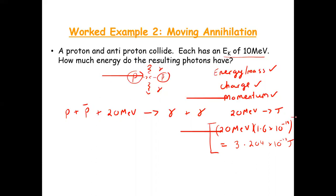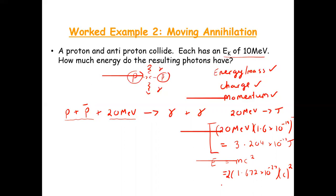Now we need to figure out how much energy is created when the proton and antiproton annihilate, using E equals mc squared. The mass of a proton on page 46 of your tables is 1.672 times 10 to the minus 27, multiplied by c squared. Because there are two of them, we multiply by two, giving 3.0096 times 10 to the minus 10 joules.